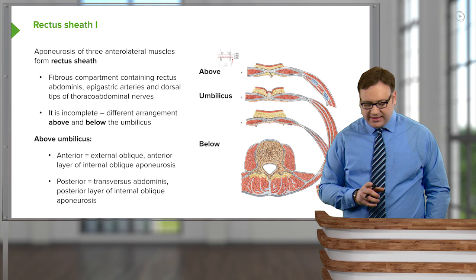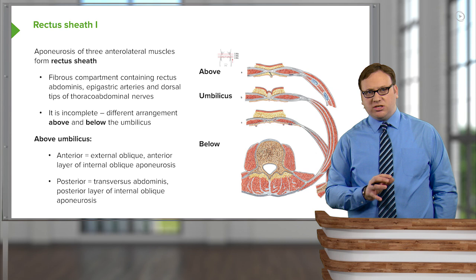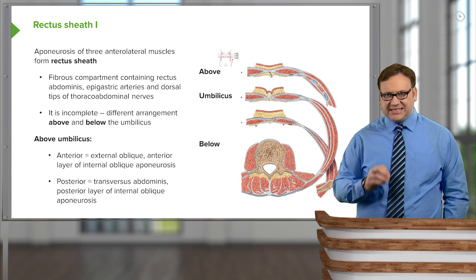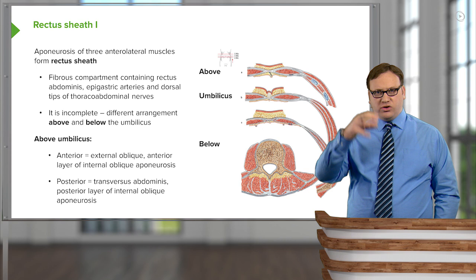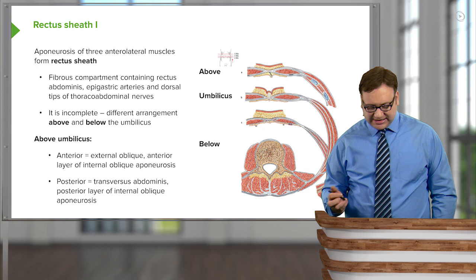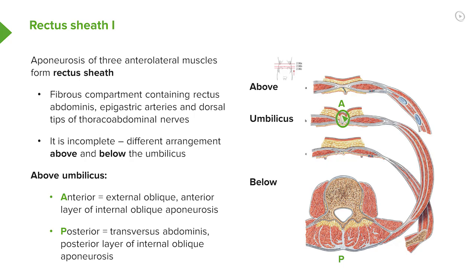These form the boundaries of what's known as the rectus sheath, formed by the aponeuroses from these muscles coming around and interdigitating around rectus abdominus to unite in the midline. Now, this is a particularly complicated image, so I'll take some time explaining it. What we can see is a transverse section through the abdomen — like someone has just chopped me in half and you're looking down onto the cut surface. We can see the posterior aspect down here, which is at your back, and anteriorly here is where your umbilicus is. We have three anterolateral abdominal wall muscles.